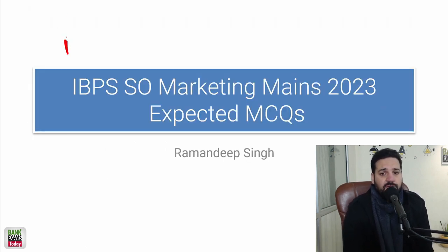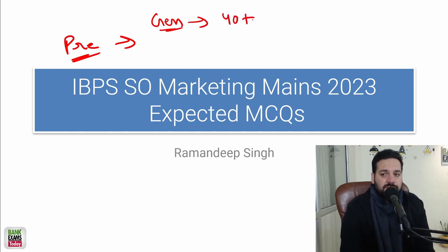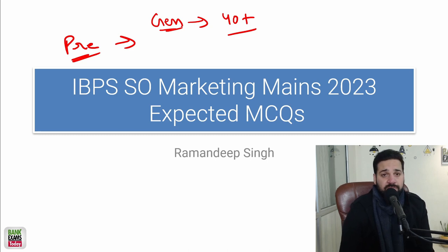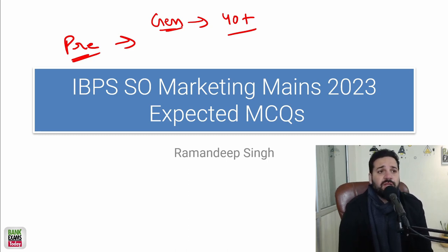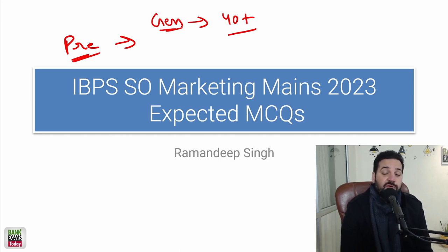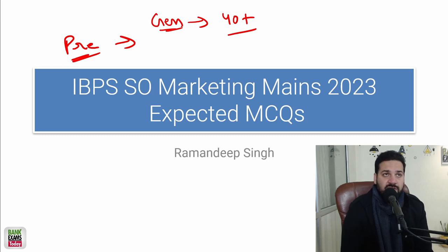Regarding the pre-exam: if you are a general category student expecting 40 plus or 45 plus marks, then start your preparations for mains. The difficulty level of the pre-exam was moderate to difficult — it was not easy at all. Students told me that quant was okay but reasoning was tough. I'm expecting the cutoff to be around 50. If you're expecting marks above 40 for general category, be positive and start preparing for mains. The result will be out within a week or so.